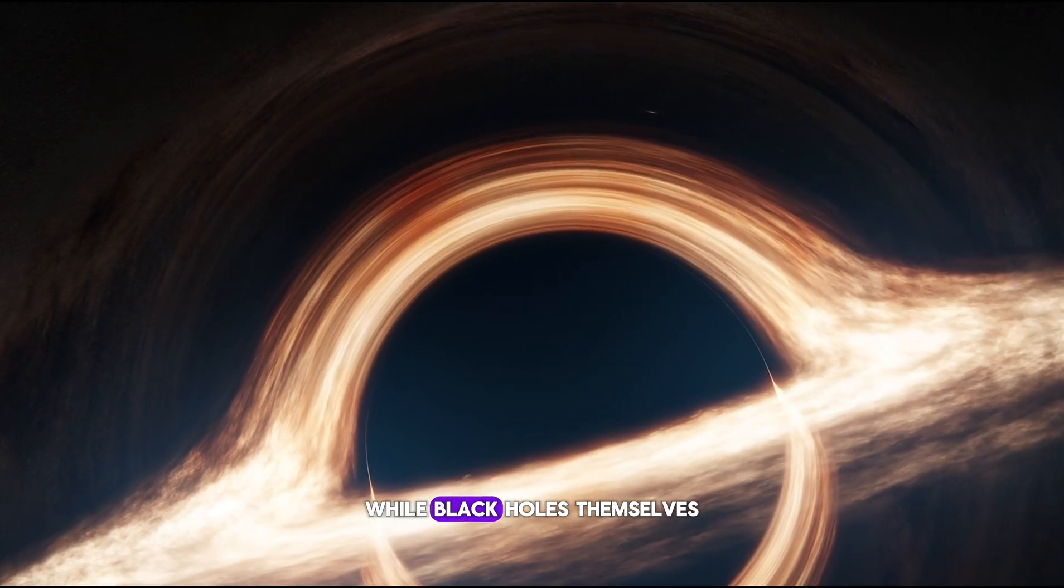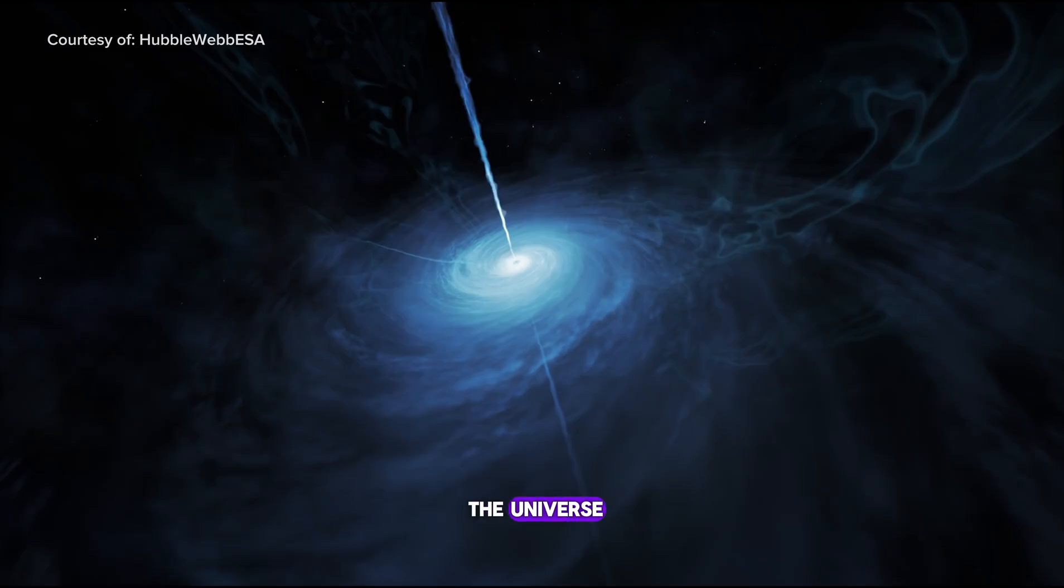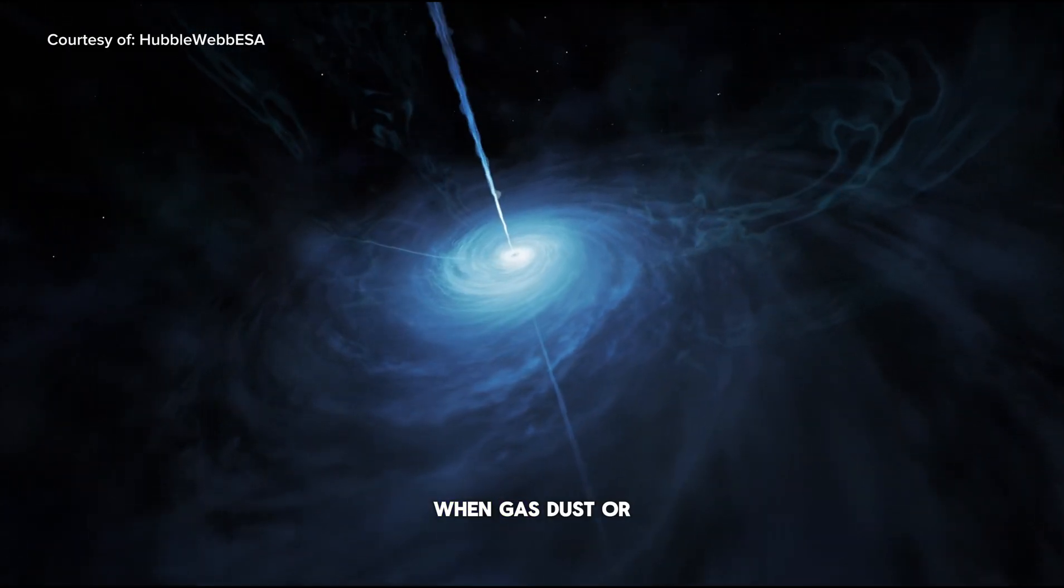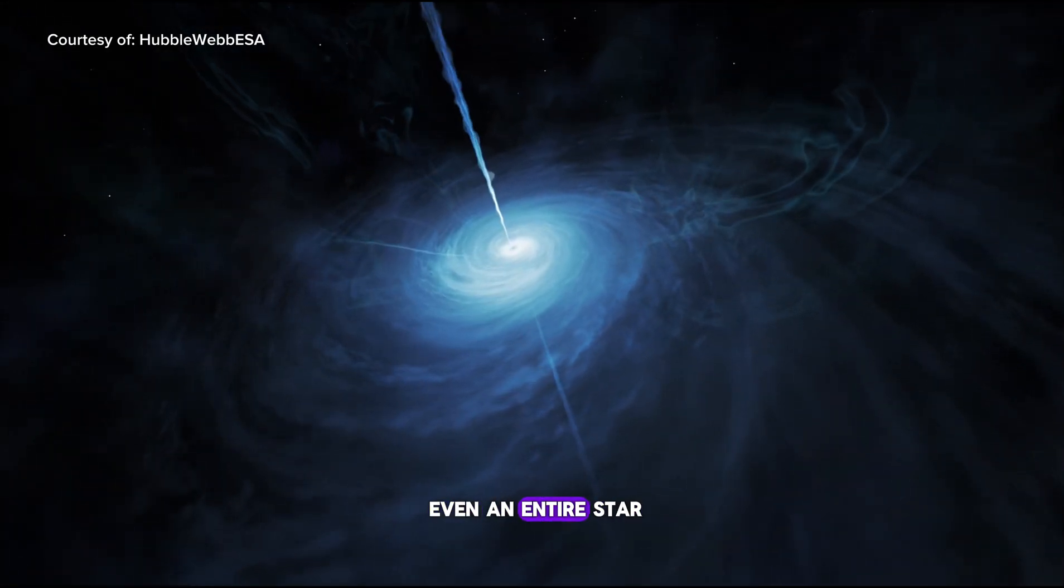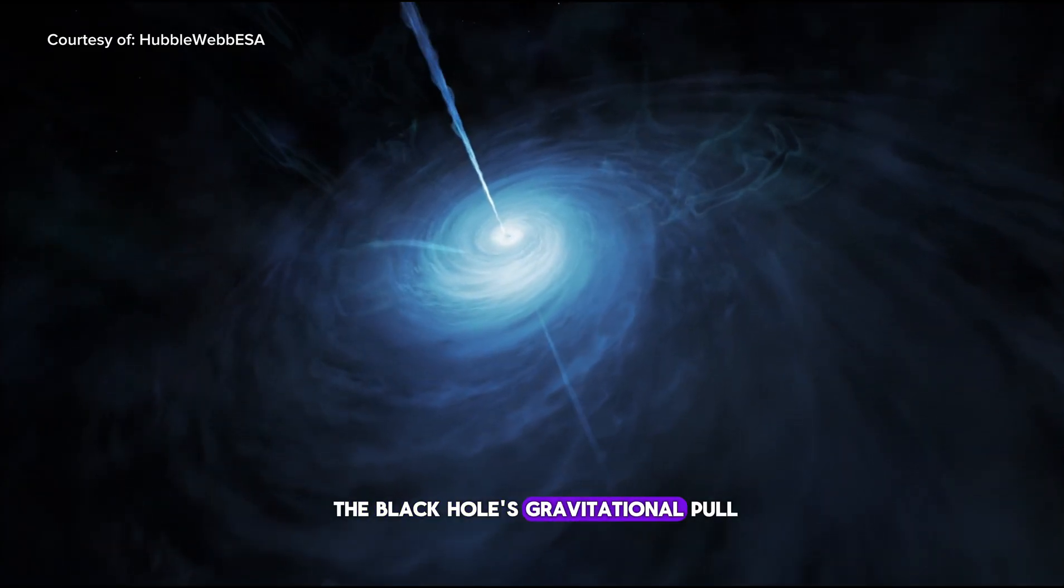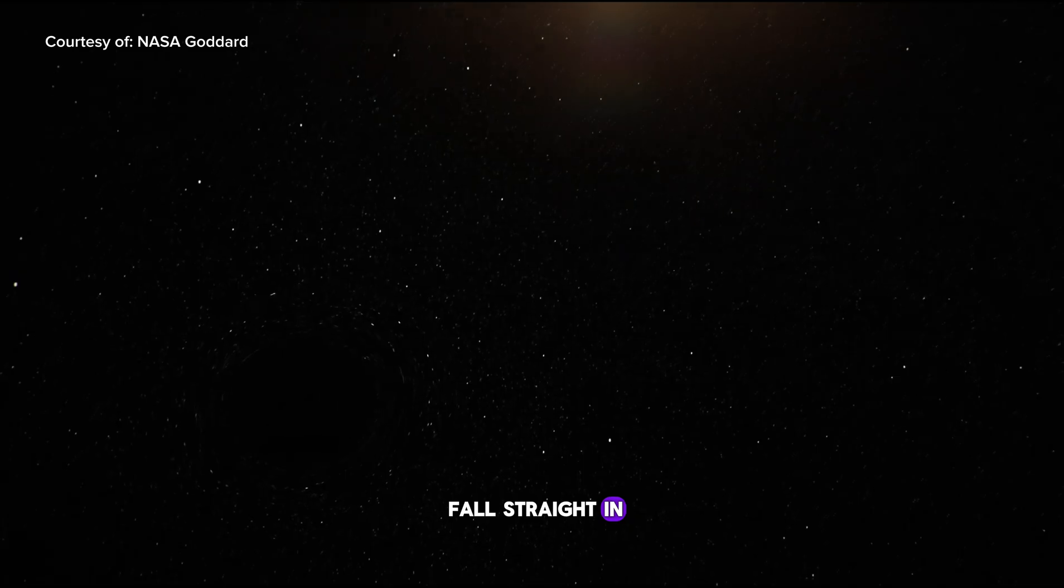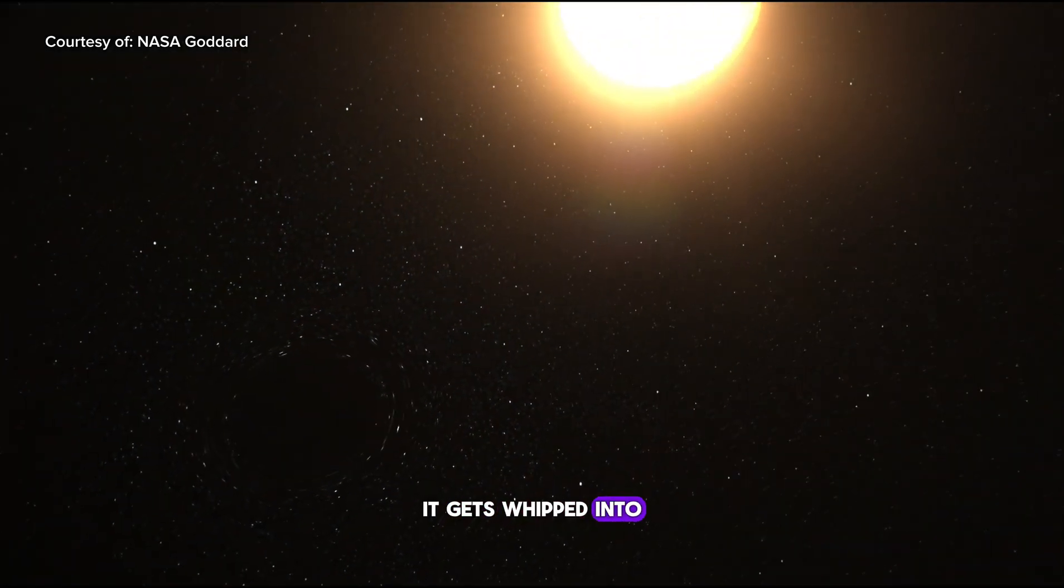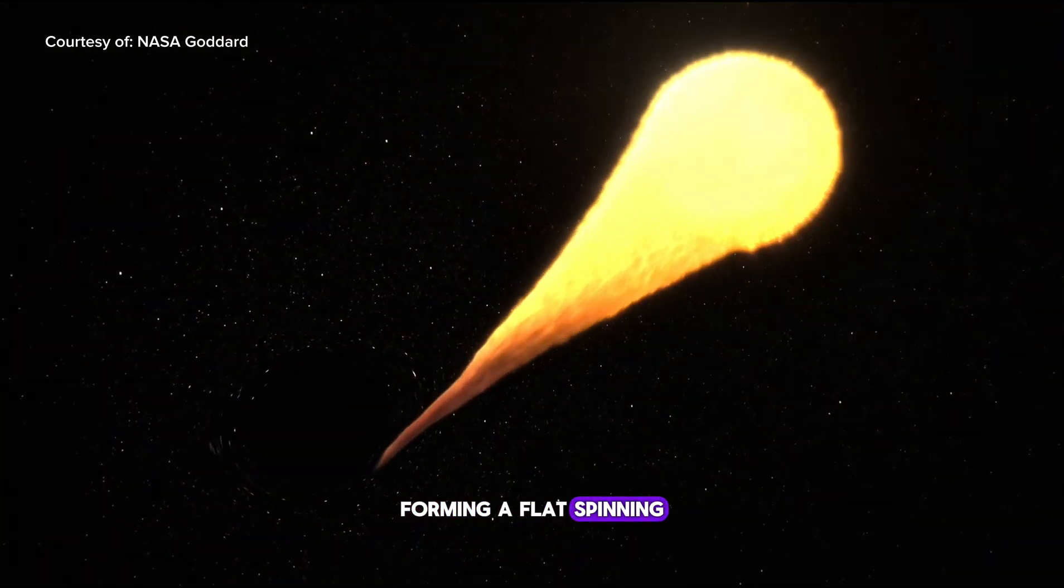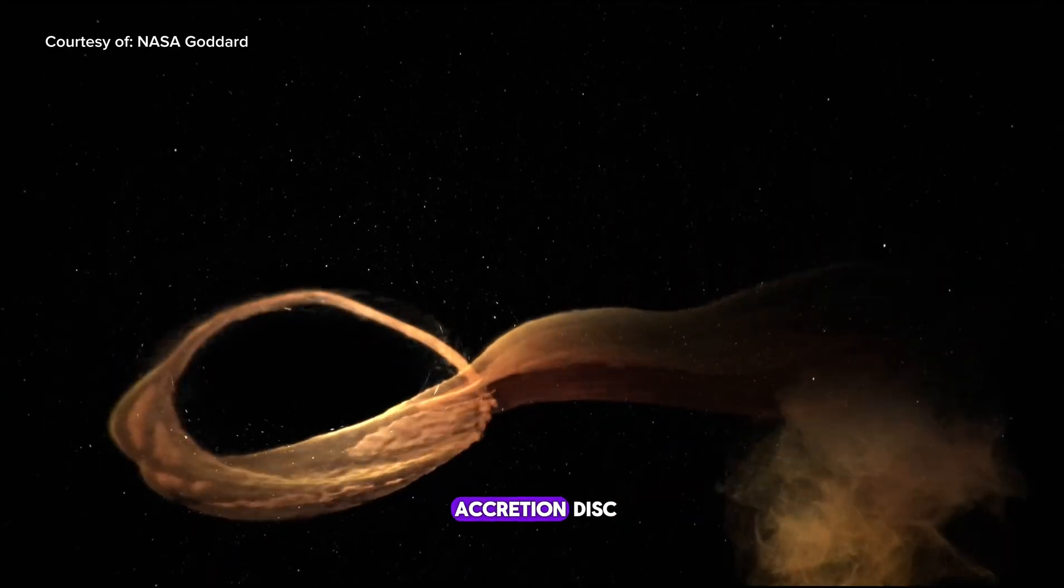While black holes themselves are black, their mealtimes are the brightest shows in the universe. When gas, dust, or even an entire star gets too close, it gets caught in the black hole's gravitational pull. But it doesn't just fall straight in. It gets whipped into a frenzy, forming a flat, spinning disk around the event horizon. This is called an accretion disk.